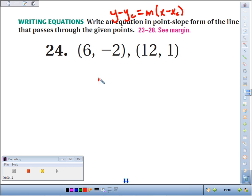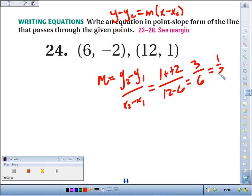So let's use our slope formula, which is y₂ minus y₁ over x₂ minus x₁. That's 1 minus negative 2 over 12 minus 6. We get 3; 12 minus 6 is 6, so 3 over 6 is 1/2. Now you've got two possible answers.